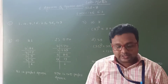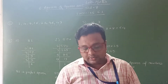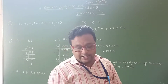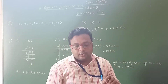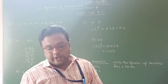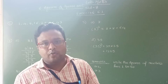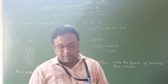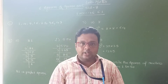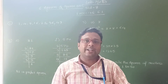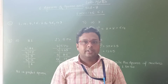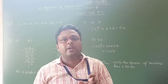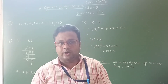Now see the second question. Question number 2 is given: Which of the following numbers are perfect squares? Some numbers are given here. You have to identify whether the given number is a perfect square number or not.